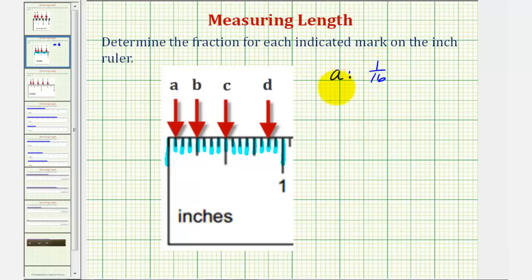Now let's consider B. Using the smallest partition, we can count one, two, three, four pieces, or four-sixteenths of an inch.